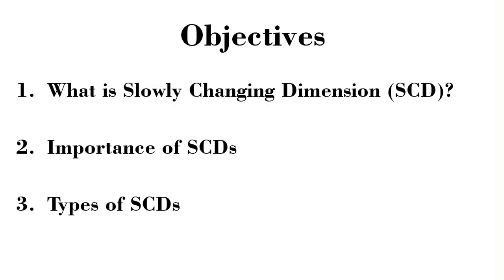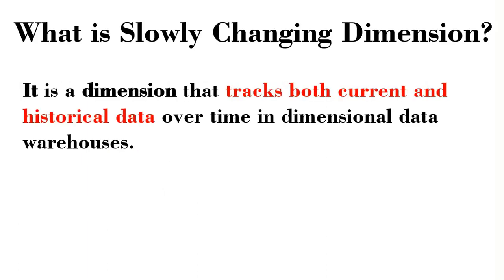At the end of this video, you will know what is a slowly changing dimension, the importance of slowly changing dimensions, and the types of slowly changing dimensions that exist. A slowly changing dimension is a dimension that tracks both current and historical data over time in a dimensional data warehouse.